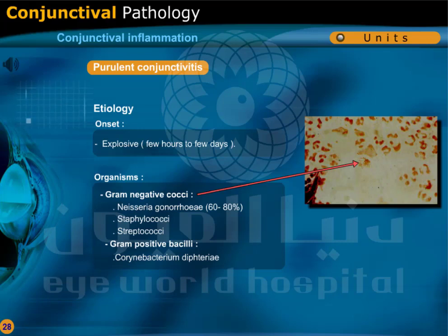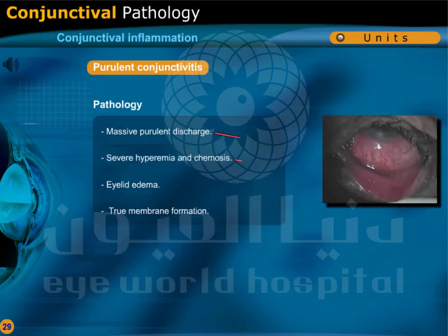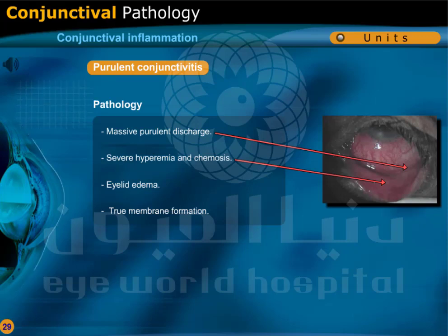Gram-positive bacilli include diphtheria. In purulent conjunctivitis, there is massive purulent discharge, severe hyperemia and chemosis, eyelid edema, and true membrane formation.